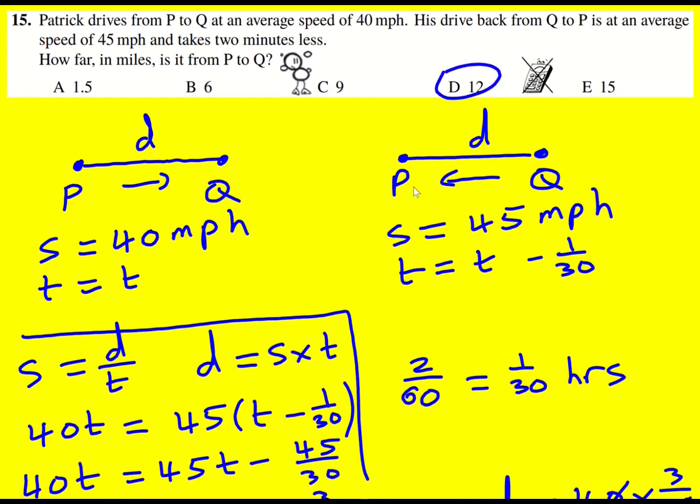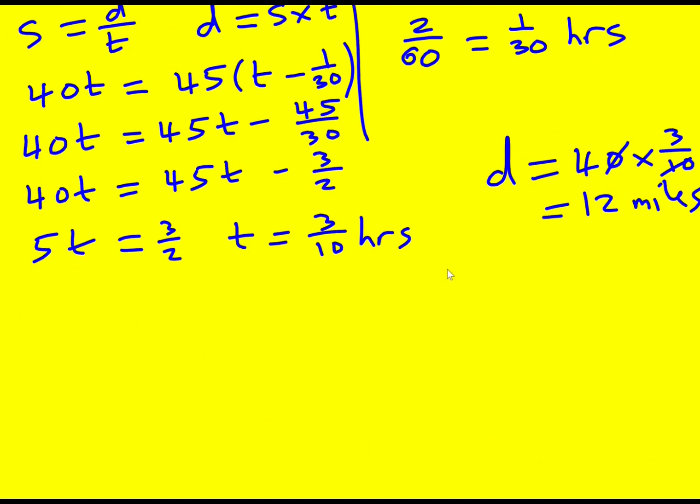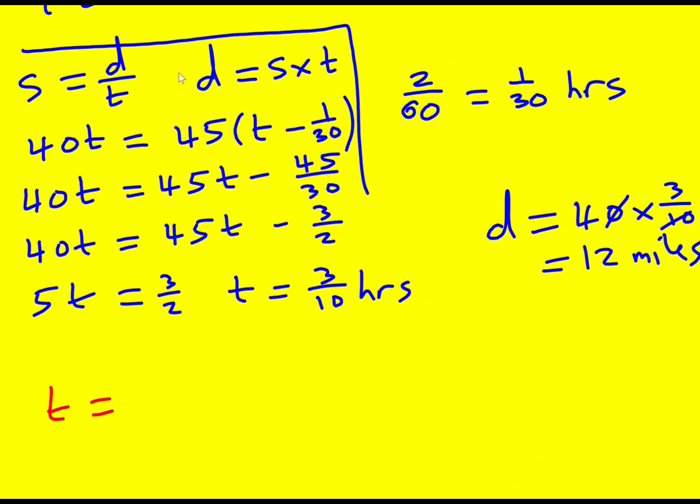Now that method works absolutely fine. I just want to go through one other way you could do it. Arguably this is a bit simpler, this is how the answers did it actually. Instead of using distance equals speed times time, we could instead have rearranged to make time equals distance over speed.